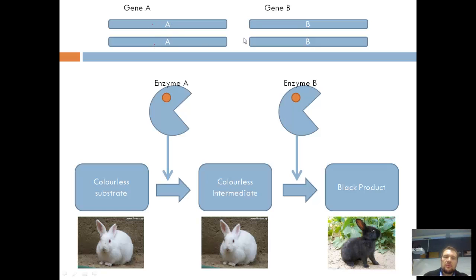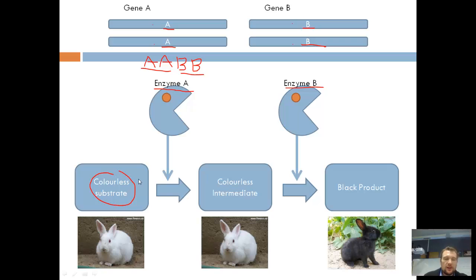Here we have a homologous pair of chromosomes and another homologous pair. On each chromosome we have the genes which make the enzyme. With genotype big A, big A, big B, big B — because we've got big A's we can make enzyme A, and because we've got big B's we can make enzyme B. So we start with our starting chemical, enzyme A converts it into the intermediate form, and enzyme B converts that intermediate into the final product, resulting in a rabbit with these alleles being black.